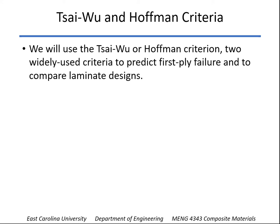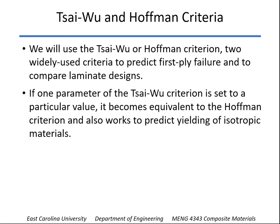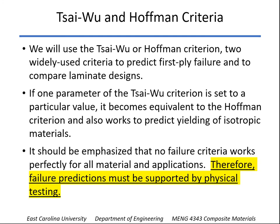If we choose the Tsai-Wu criteria with one parameter set to a particular value, it becomes equivalent to the Hoffman criteria. Also, for isotropic materials, it reduces to the von Mises yielding criteria. So this one criterion will work for composite materials and for steel and aluminum — that's what we're going to use in our spreadsheet. Remember that none of them work perfectly for all materials and all applications, so failure predictions are useful but not perfect. If it's a critical application, you certainly have to do physical testing to verify your design.